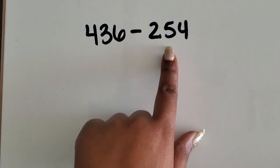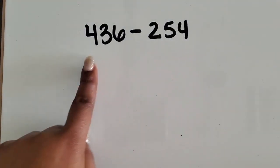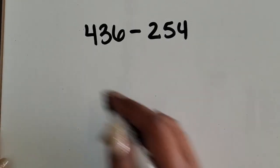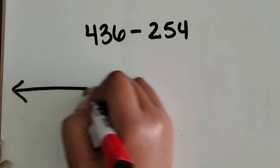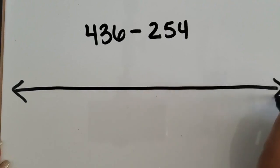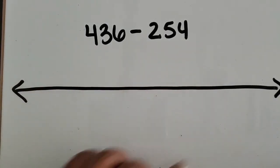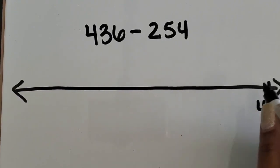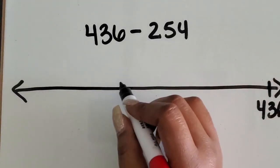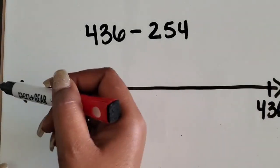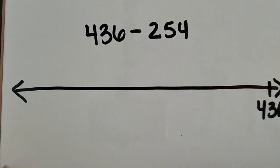We are going to subtract one three-digit number from another three-digit number using an open number line. We're going to start with the larger number first on the right side, because I'm subtracting or going backwards in numbers, I'm going to go to the left on the number line.